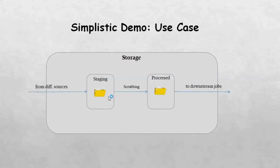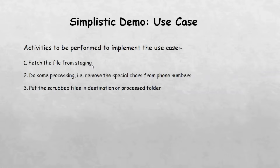If you break down the activities in our use case, you'll see we have three steps for building a pipeline. First, we need to fetch the file from staging. Then we need to do some processing — that is, removal of special characters from phone numbers. And then we need to put the scrubbed file in the destination or the processed location.